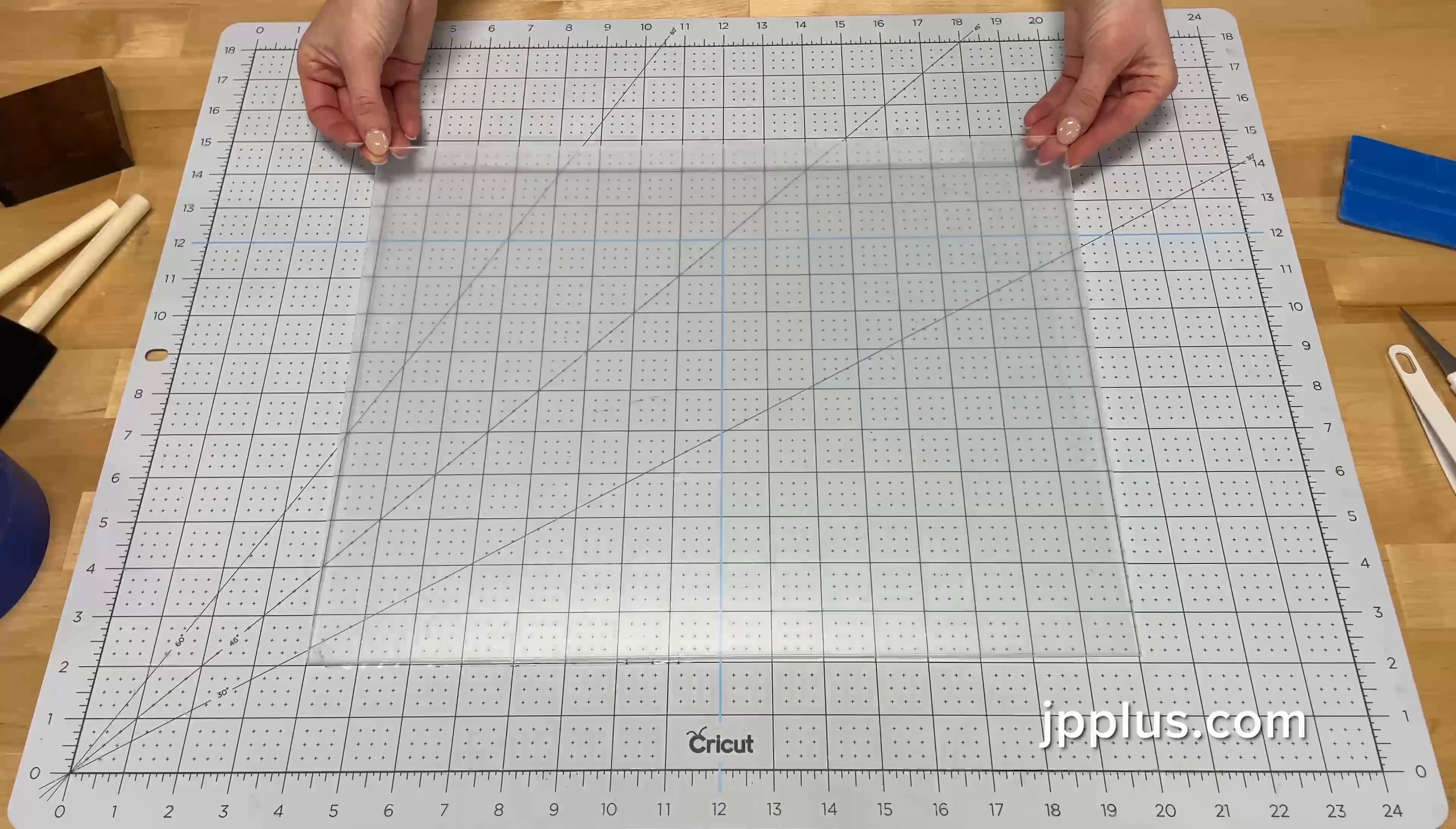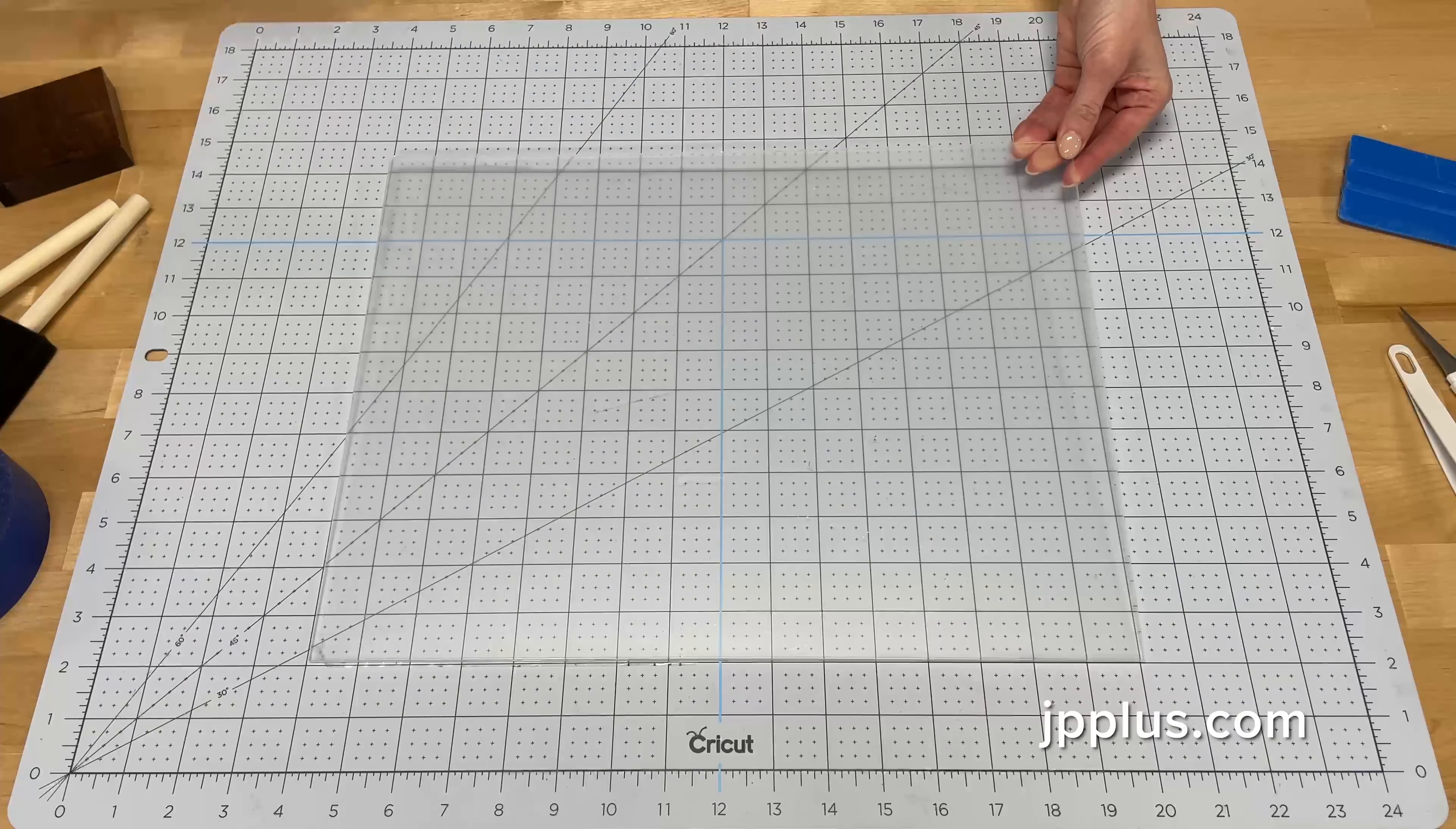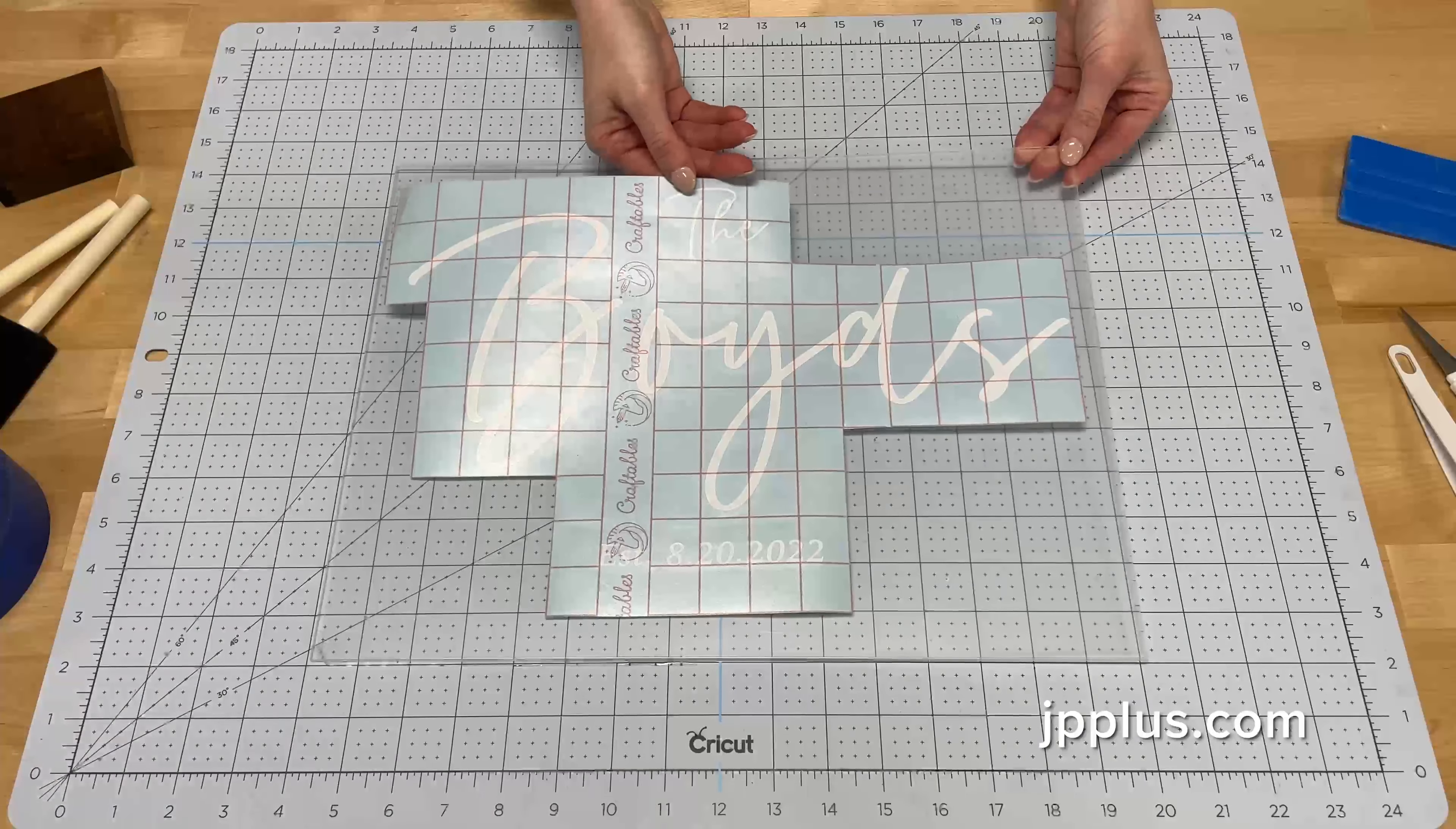So we've got our pre-cut cast acrylic sign and I went ahead and cut out the vinyl already, our vinyl transfer, and we're going to start by applying the vinyl transfer to the cast acrylic.